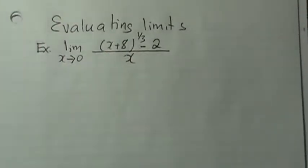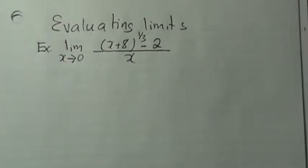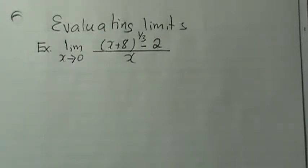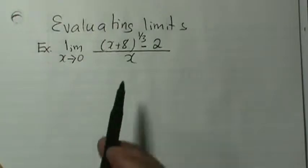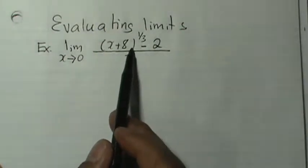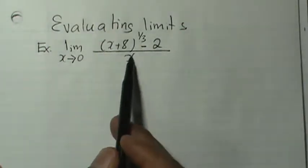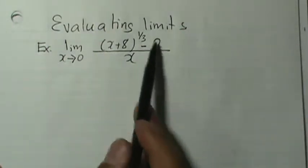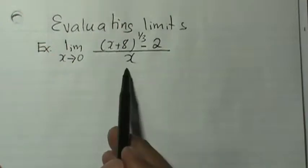Hi and welcome to Giles Academy. Today's lesson is about evaluating limits, and here's an excellent example. As the limit of x approaches zero, we have in bracket x plus 8 to the power of one-third, subtract 2, all over x.